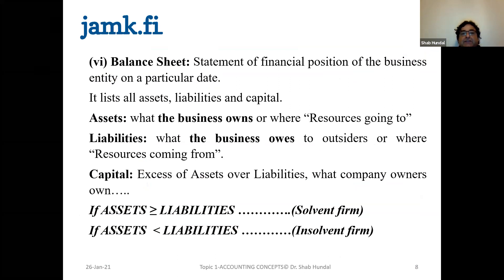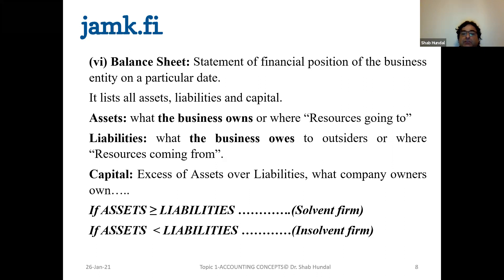The name itself suggests that it's a statement of financial position of the business entity on a particular date. The business entity exists if the company has assets more than liabilities. So the balance sheet is basically the proof that the company does exist. An existing company has a balance sheet where the assets are more than liabilities, and that shows that the company is solvent.